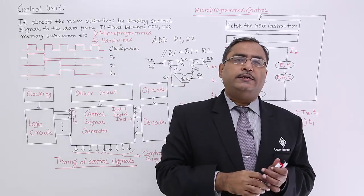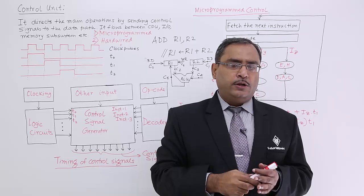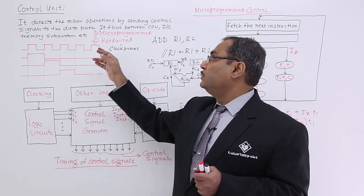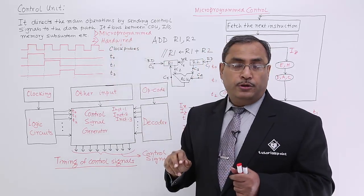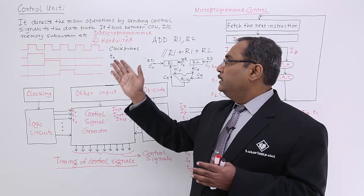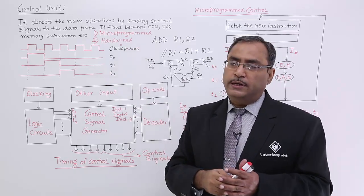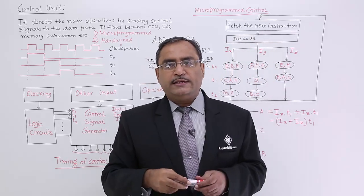This is a hardware control. So 2 types of control circuits are to be fabricated. In our next video we shall go for this micro program control. How the micro program control circuit can generate it? Then I shall go for the hardware control circuit as well. Please watch my next videos.